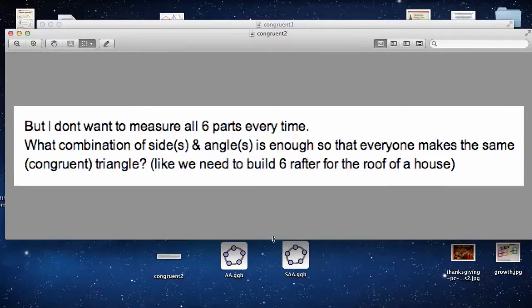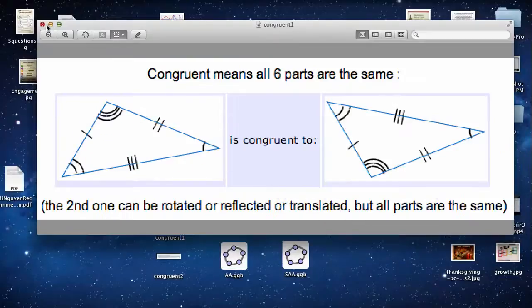Now, here's the thing though. I don't want to have to measure all six parts every time I want to make the same triangle. So let's find some minimum combination that we can deal with. So if we just measure one, two, three things, we know all six parts are the same. That's what we're going after first.